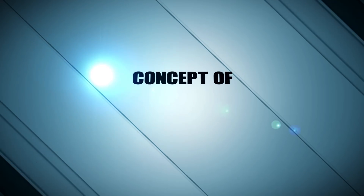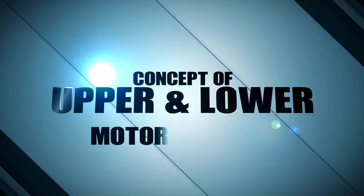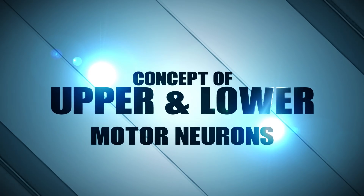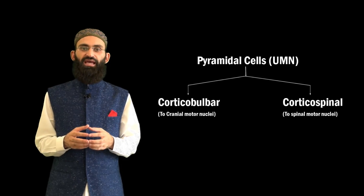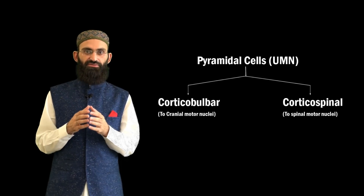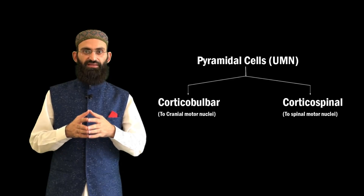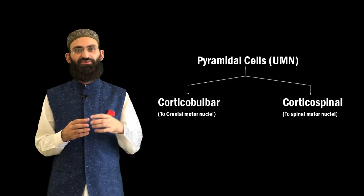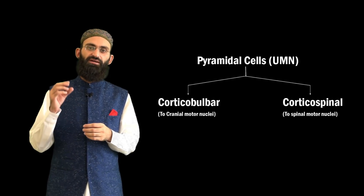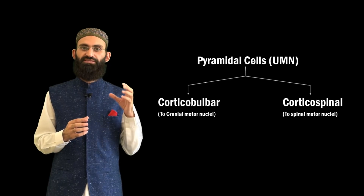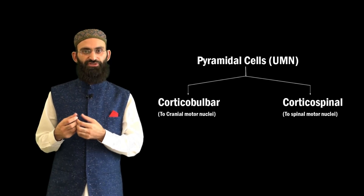The pyramidal cells of the cerebral cortex are the upper motor neurons, and their axons make two important descending tracts: the corticobulbar tract and the corticospinal tract. Corticobulbar fibers innervate cranial motor nuclei, while corticospinal fibers innervate spinal motor nuclei.